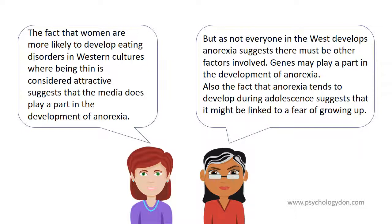But as not everyone in the West develops anorexia, despite being exposed to the same media images, this suggests there must be other factors involved. Genes may play a part in the development of anorexia. Also, the fact that anorexia tends to develop during adolescence suggests that it might be linked to a fear of growing up, which is a psychodynamic explanation.